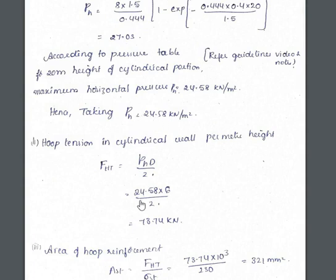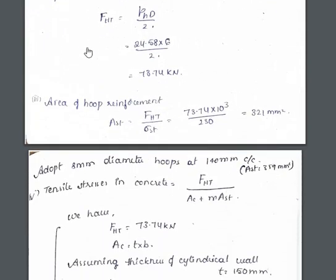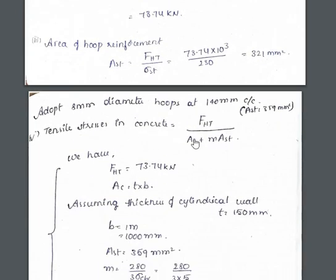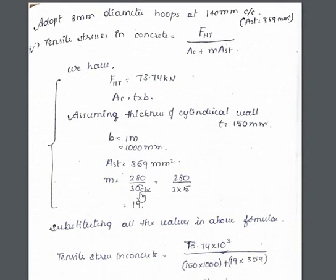Hoop tension in the cylindrical wall per meter height: T = ph × d / 2 = 24.58 × 6 / 2. Find the area of hoop reinforcement from this hoop tension. Provide 8 mm diameter hoops at 140 mm center to center as rings. Then find the tensile stress in concrete: fhd / (Ac + m × Ast), where m is the modular ratio = 280 / (3 × sigma_cbc), with sigma_cbc taken from IS 456.